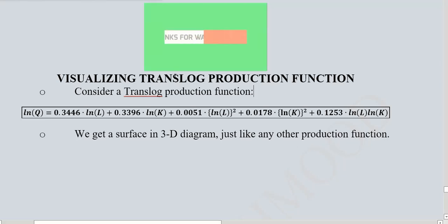So we have an estimated translog production function. The output is a function of labor and capital in the linear forms as you can see, and also in their quadratic forms. And the function is also dependent upon the interaction effects of labor and capital in their logarithmic forms. So these are various terms of this estimated translog production function.